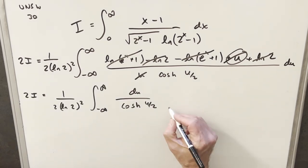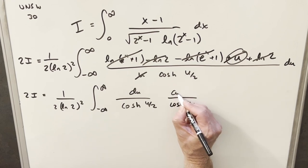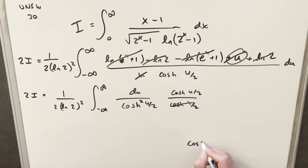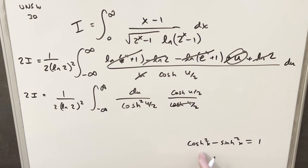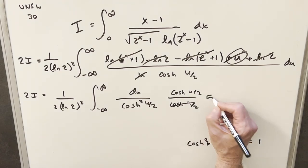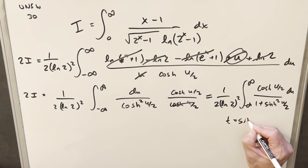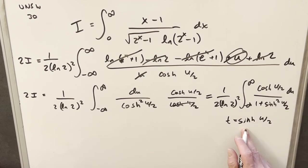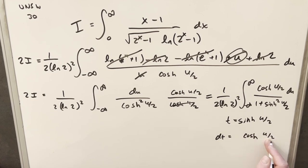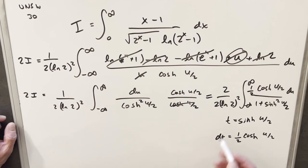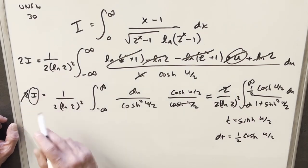Now I just need to integrate du over cosh of u over 2. I can multiply top and bottom by cosh of u over 2 so the denominator becomes cosh squared. Using the hyperbolic identity cosh squared minus sinh squared equals 1, we can write cosh squared as 1 plus sinh squared. So let t equal sinh of u over 2. The derivative of sinh is cosh, so dt equals cosh of u over 2 times one half du. I'll create a one half here and multiply a 2 out front, cancelling with the 2 from our earlier factor.